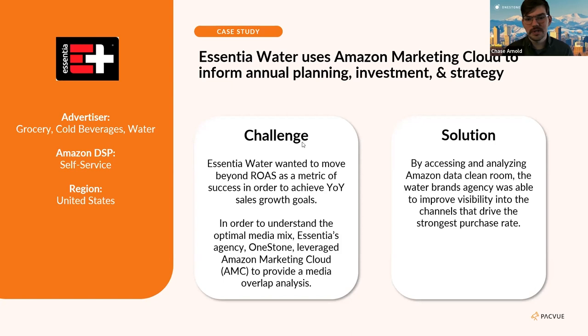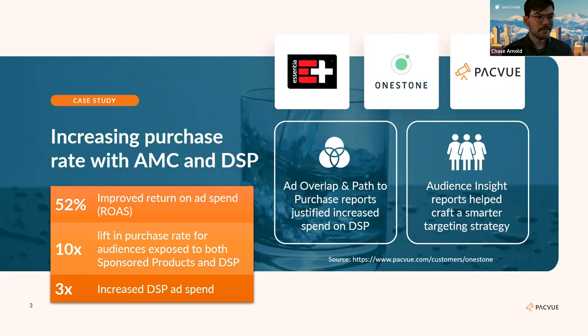At this point, this was all the data we needed to restructure our strategy. Once we had this, we knew we needed to grow this segment, and the only way of really doing that was starting to spend more aggressively against DSP. Looking six months later, we had improved our account's ROAS by 52% and drove a much stronger total purchase rate.